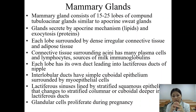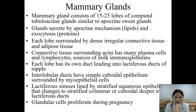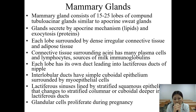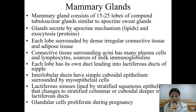Regarding mammary glands: each gland consists of 15 to 25 lobes of compound tubular acinar glands, similar to apocrine sweat glands. The glands secrete by apocrine mechanism for lipids and by exocytosis for proteins. Each lobe is surrounded by dense regular connective tissue and adipose tissue. The connective tissue surrounding the lobes has many plasma cells and lymphocytes, which are sources of milk immunoglobulins.